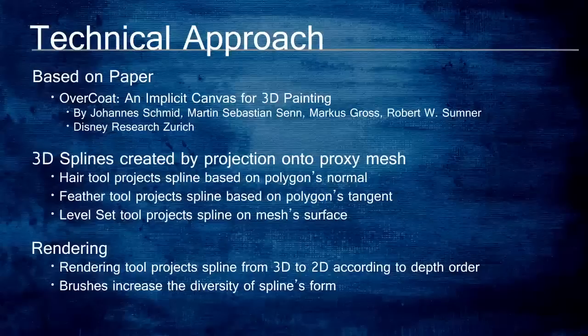Overcoat for Maya has the same non-photorealistic renderer as Overcoat. The non-photorealistic renderer first sorts each stroke according to their depth order. Then each stroke is projected from 3D space onto a 2D image plane through the camera view. Finally, each stroke is painted with their unique thickness, transparency, color, and brush type in 2D space.